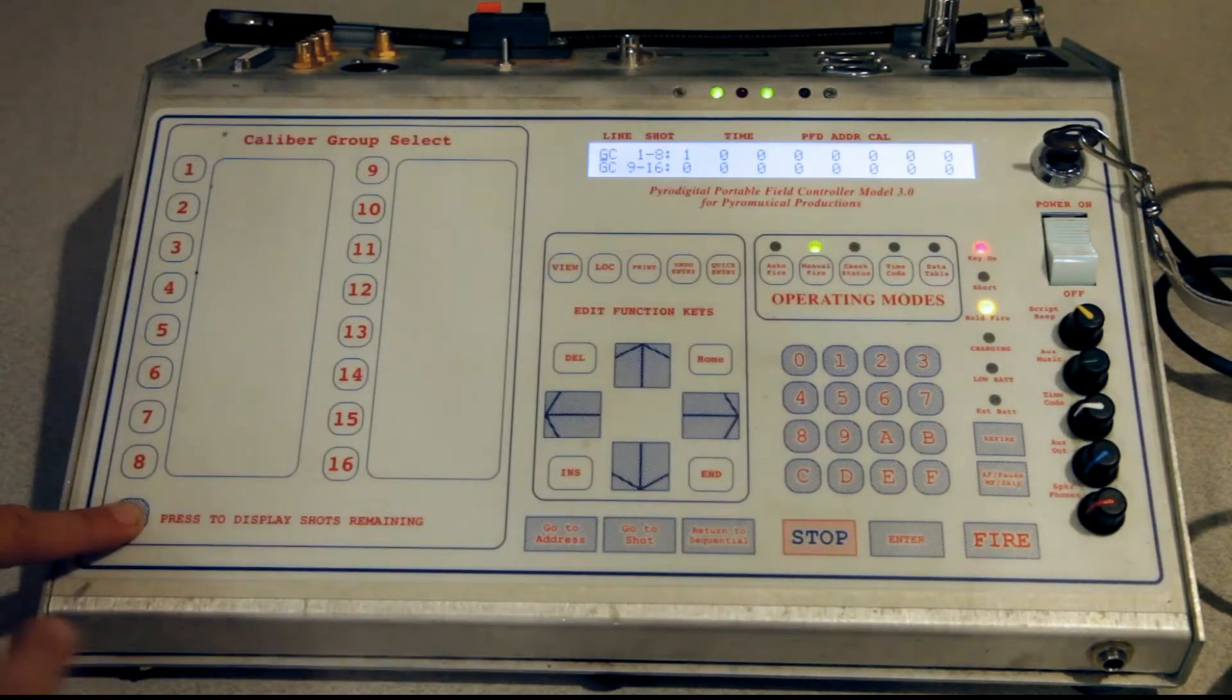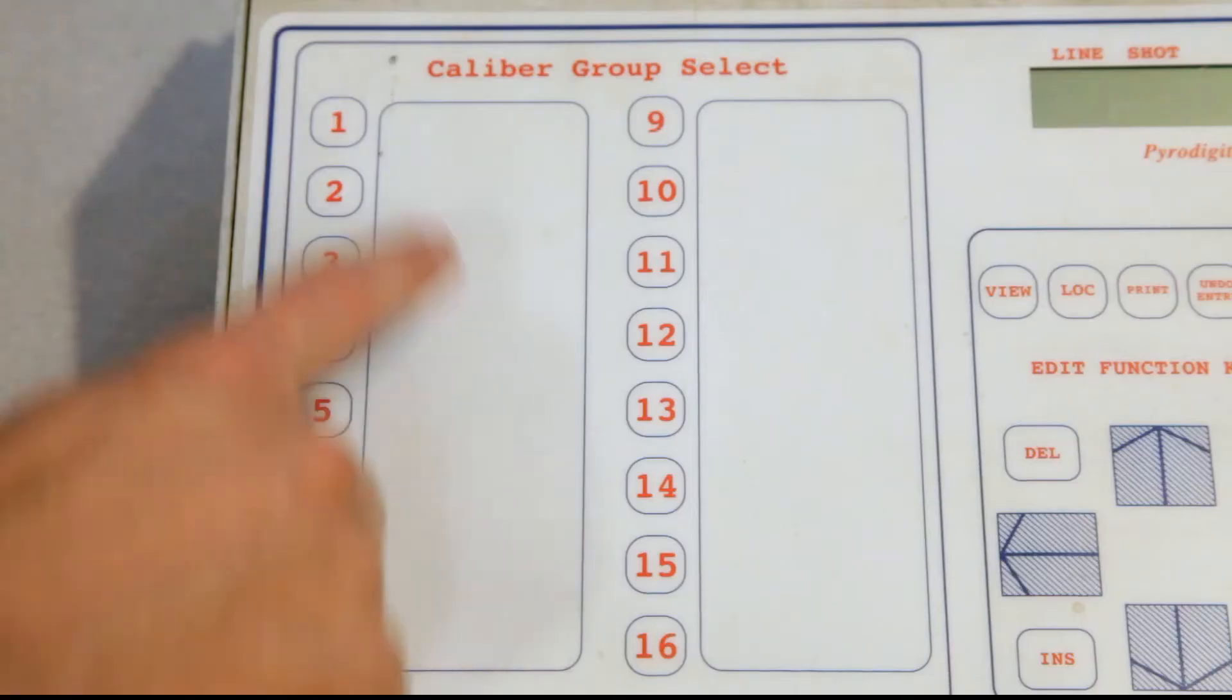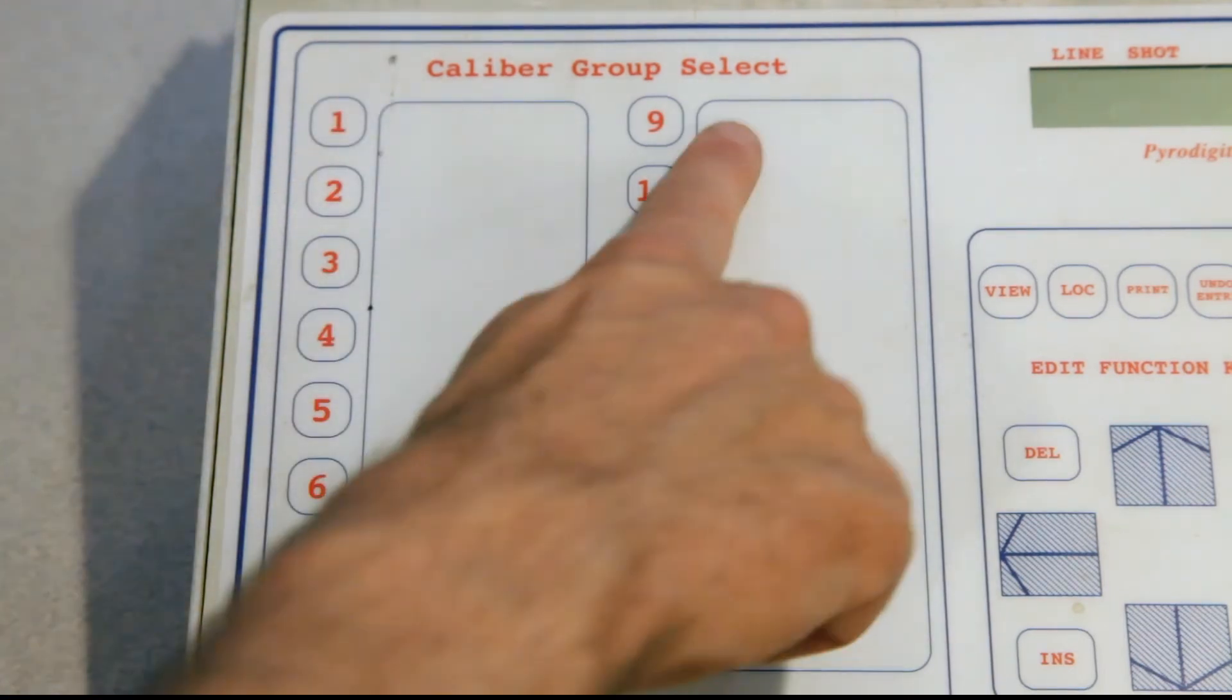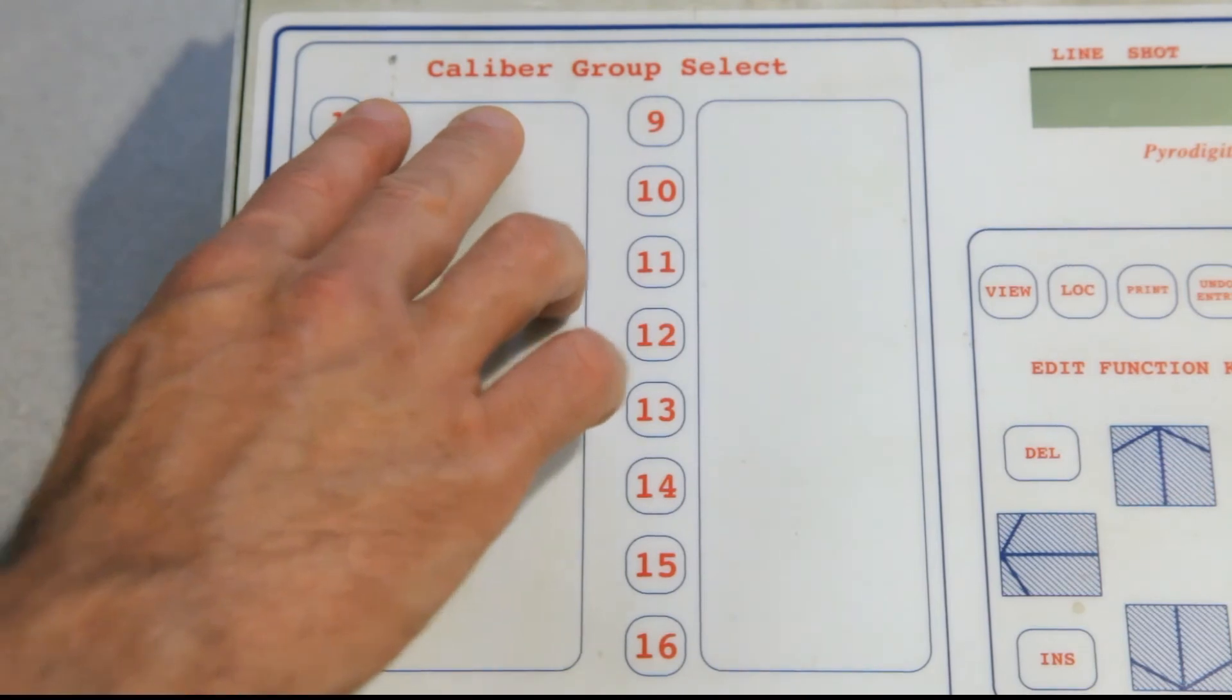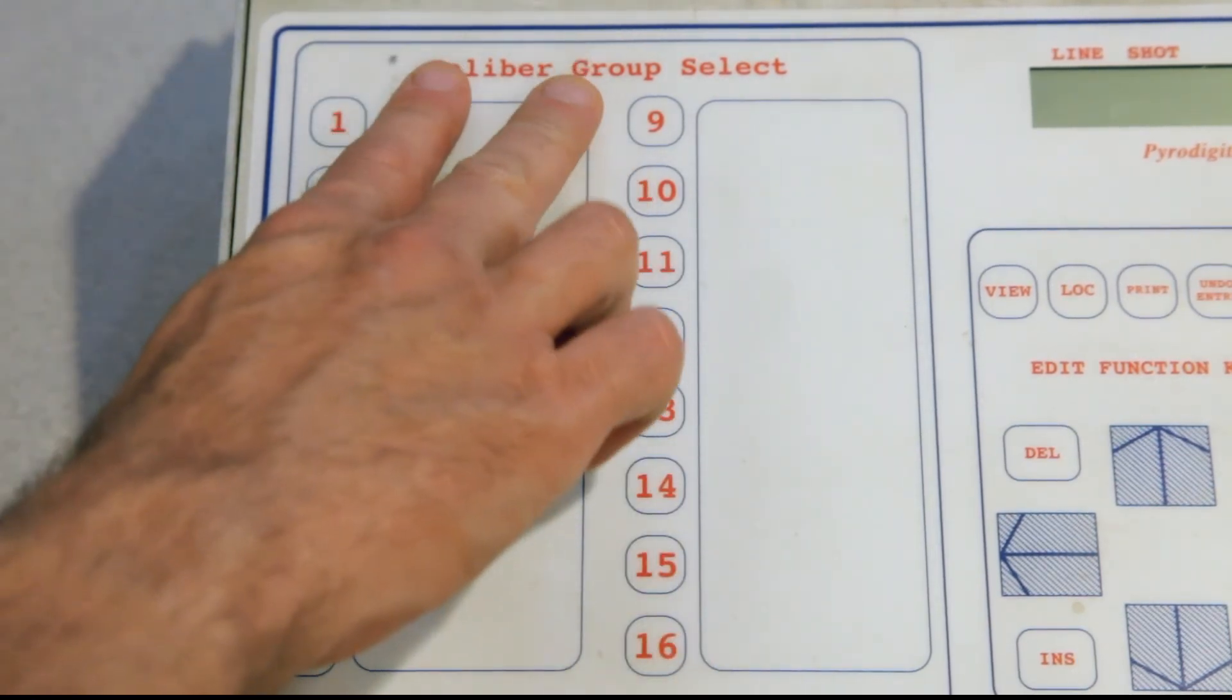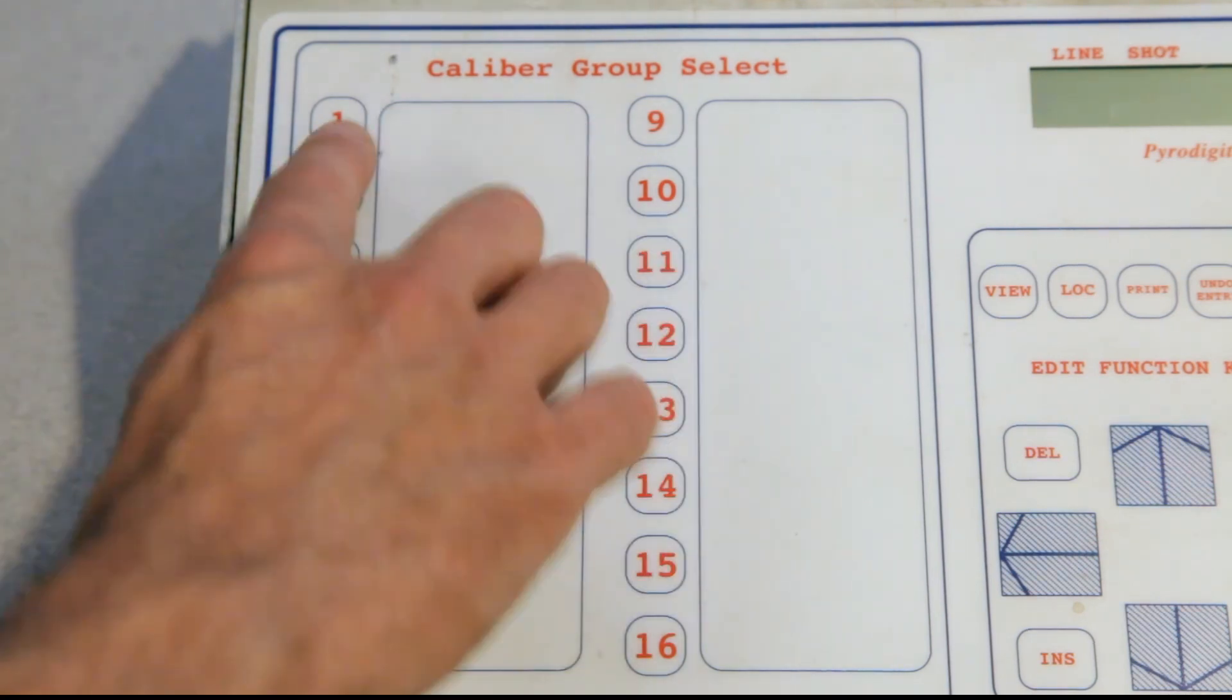That display will remain as long as you hold the button down. These spaces next to each of the caliber group numbers can be used to write notes in reference to what's in each caliber group. It's usually best to put a piece of tape there that you can write on.